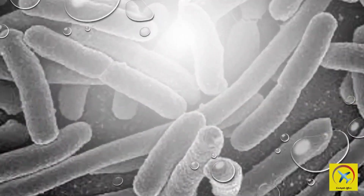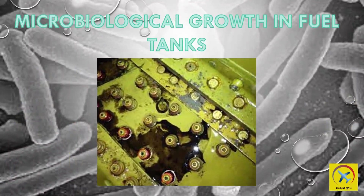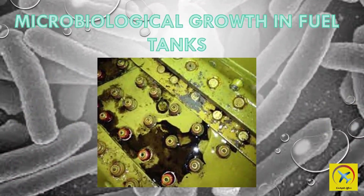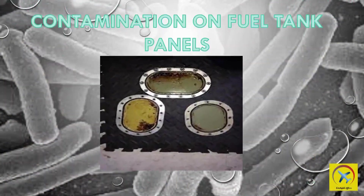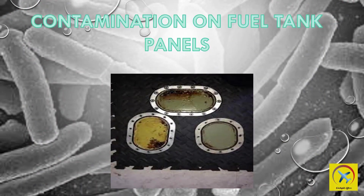Water can enter an airport fuel system through leaks in underground tanks, leaks in the seals of items such as dome covers, floating roofs and hatches, during rain or snow storms, when equipment is being washed, by marine or surface transport equipment delivering fuel to the airport, and by condensation and precipitation of dissolved water in fuel.